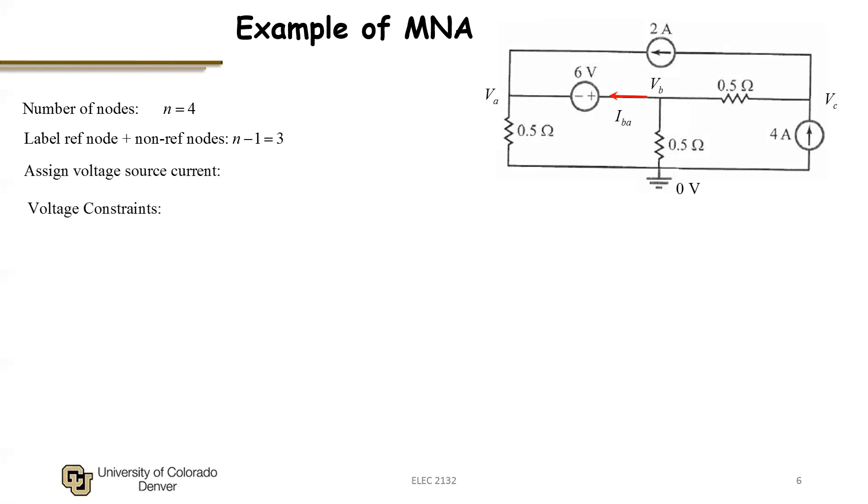Okay, so now I have a total of four unknowns, so I need four equations. To get these equations, I first start with my voltage constraints. So I have one voltage source, and I see across this voltage source that V_B minus V_A must be equal to 6 volts. So the source constrains the two node voltages, V_B and V_A.